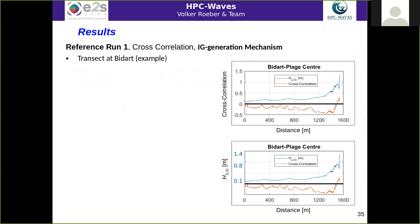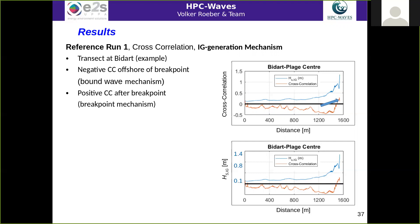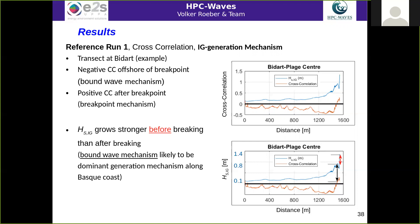It is difficult to determine which mechanism is predominant for the generation of infragravity waves. Taking a transect at Bidart as an example, we find negative cross-correlations offshore of the breakpoint, indicating that most infragravity waves arrive with the bound wave of the wave groups. The signal becomes positive after the breakpoint, indicating some breakpoint mechanism is responsible for additional infragravity wave generation. However, when comparing overall magnitudes, the magnitude from the shoaling incoming group wave is larger than the infragravity wave growth after breaking. We conclude that the breakpoint mechanism is not predominant, and that the bound wave mechanism generates a good portion of the infragravity waves along the Côte Basque.